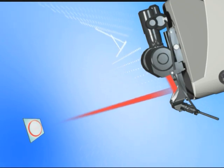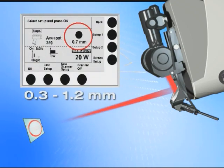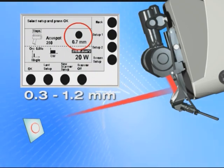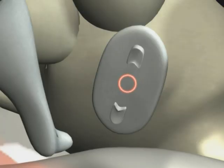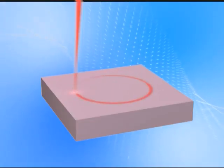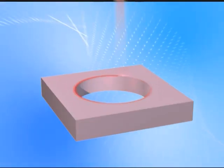The diameter of the desired fenestra is simply entered into the laser's user interface, which then controls the scanner. Upon depressing the foot switch, a spiraling small laser beam automatically creates the fenestra within fractions of a second.